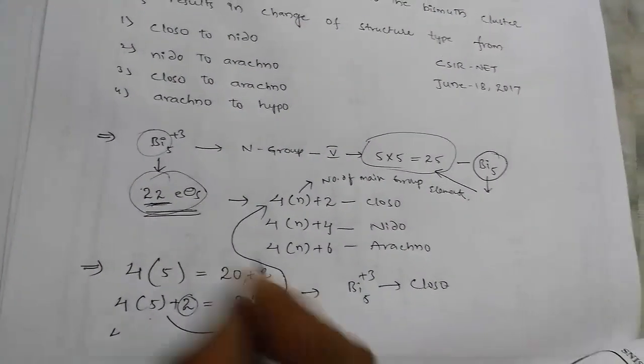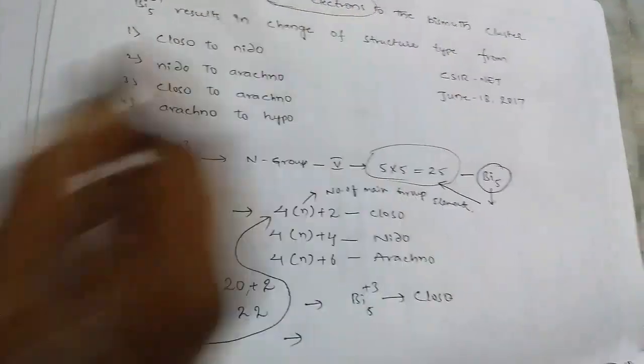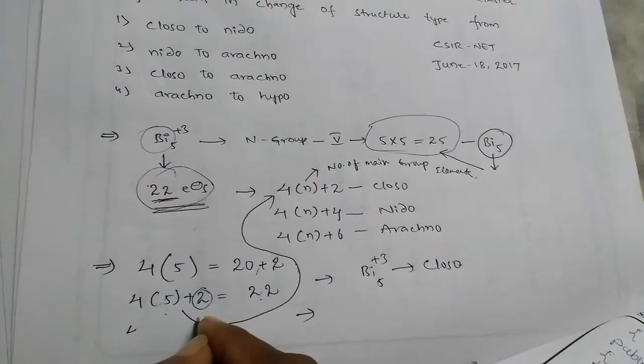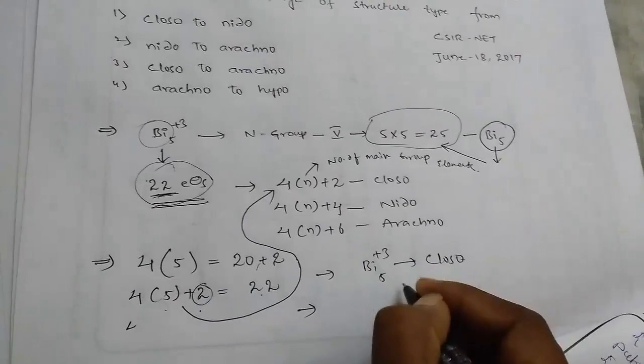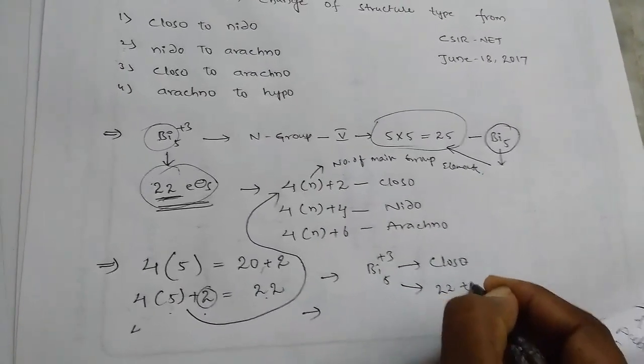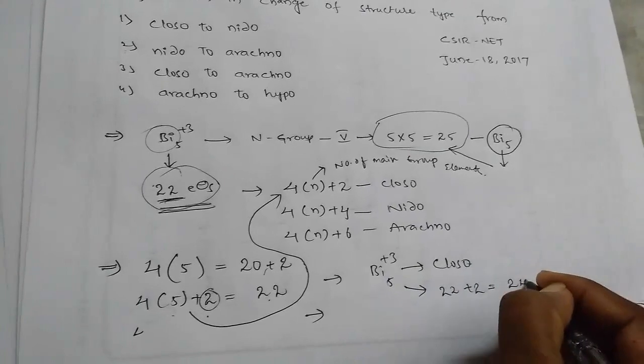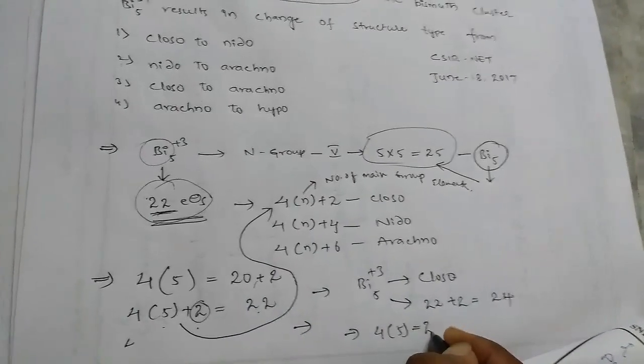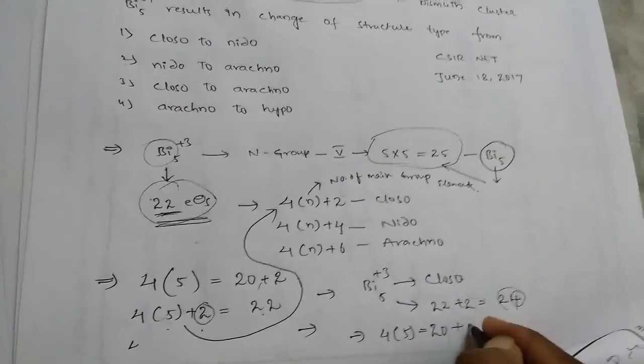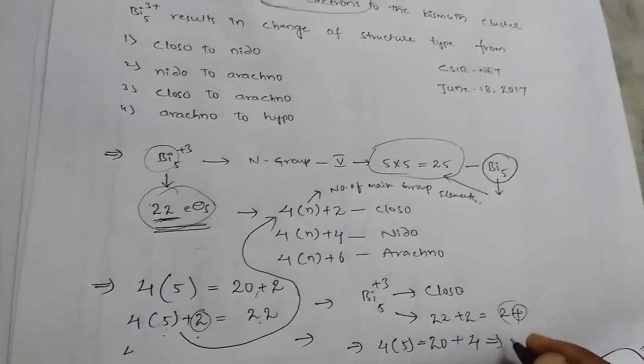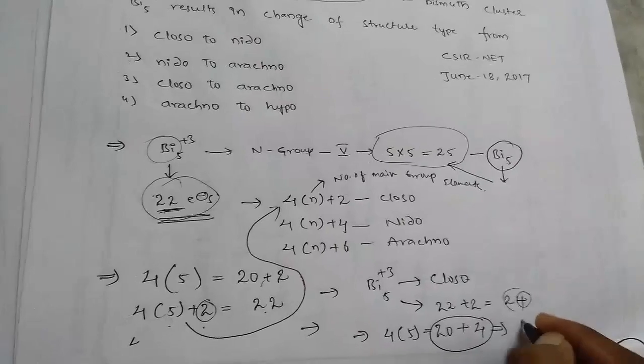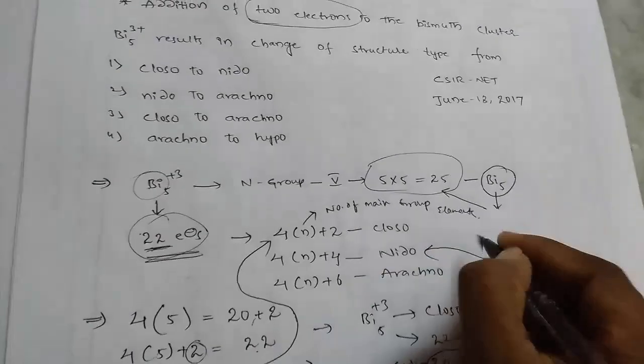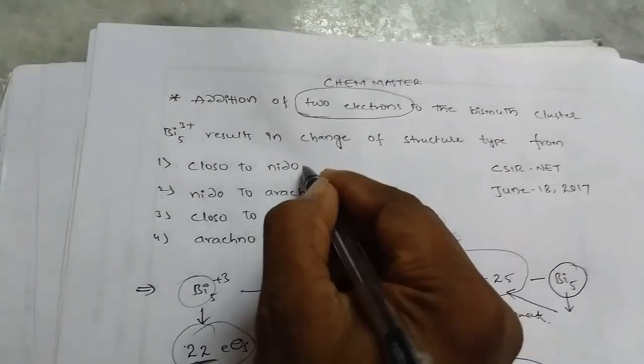And then by addition of 2 electrons, so if we add 2 electrons, it has 22 electrons, and by adding plus 2 electrons it got 24 electrons. So by applying the formula, 4 into 5 equals 20, and plus 4 is 24. That means we have 4n+4 rule. So this belongs to nido. So the answer is closo to nido.